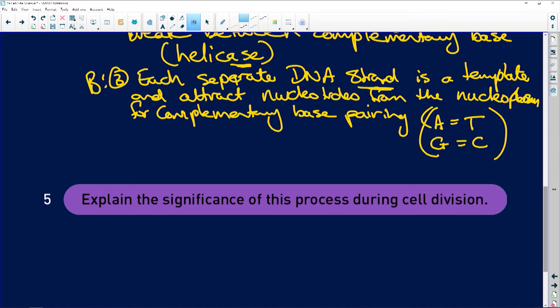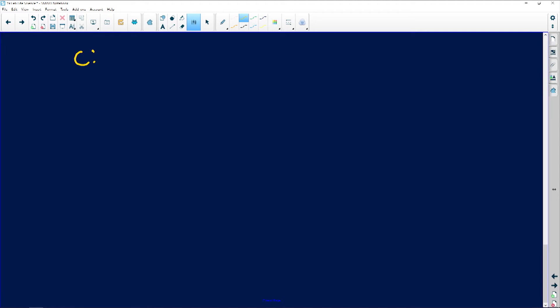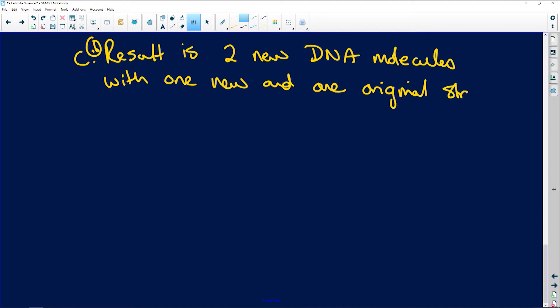For diagram C, the result is two new DNA molecules with one new and one original strand. That is what's really important - two new DNA molecules with one new and one original strand. Both are exact copies of the original DNA.